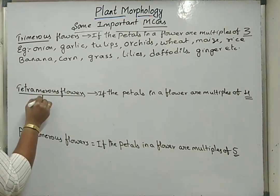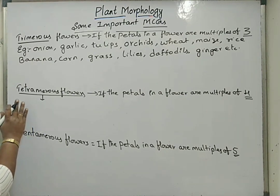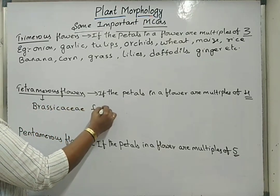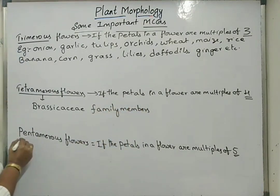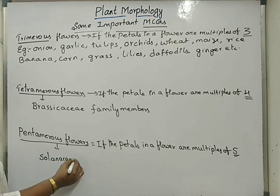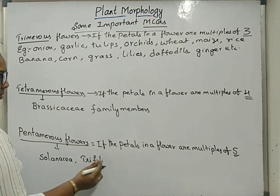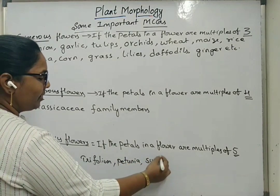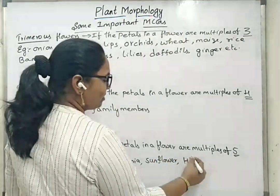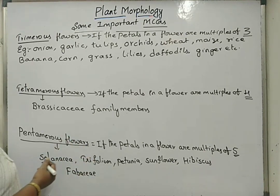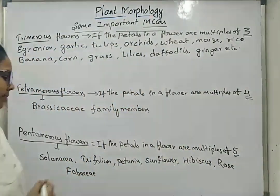Under tetramerous types of flowers, this condition of having multiples of 4 number of petals is seen in case of Brassicaceae members. Pentamerous types of flowers are seen in case of Solanaceae. Next, trifolium means the plant is having three number of leaves. Examples under pentamerous also include petunia, sunflower, hibiscus, Fabaceae members, and rose.